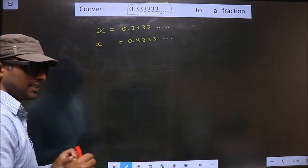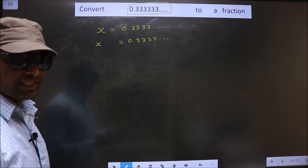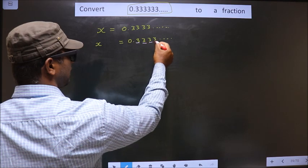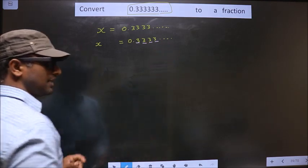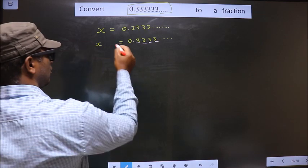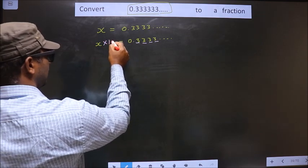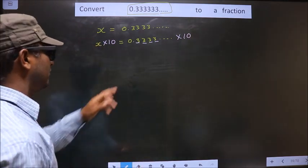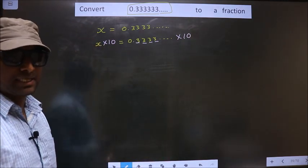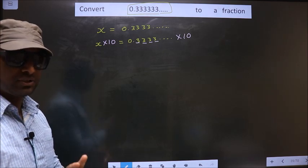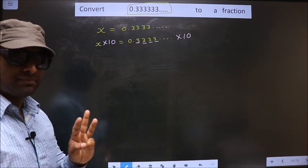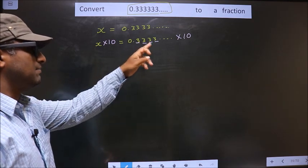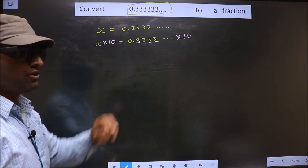Now check how many numbers are being repeated. In this, only one number, 3, is being repeated. So whenever it is only one number being repeated, you should multiply by 10 on both sides. Whenever there is one number being repeated, multiply by 10. Had it been 2 numbers, multiply by 100. Had it been 3 numbers, multiply by 1000. So here, one number — so I multiply by 10 on both sides.